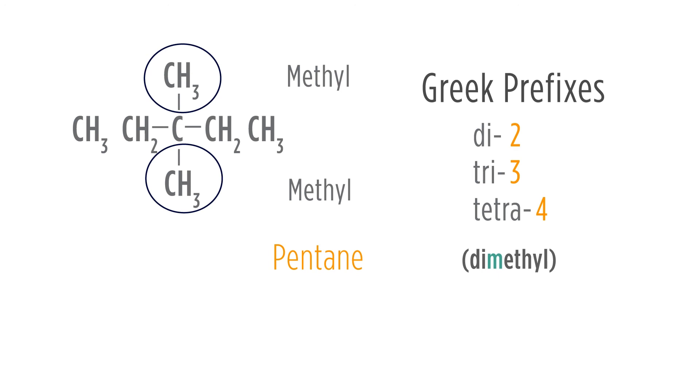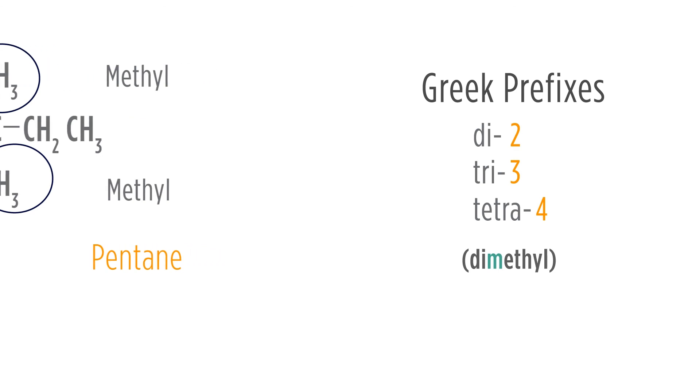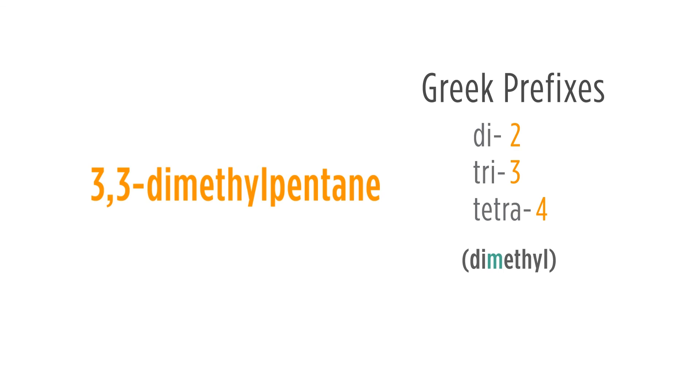But we need to say where those dimethyls are, so therefore we need to count where they are. They both would be on 3. Would 3-methyl-dimethyl pentane be the correct name? Remember, every substituent has to have its own number. So the correct name for this would be 3,3-dimethylpentane.